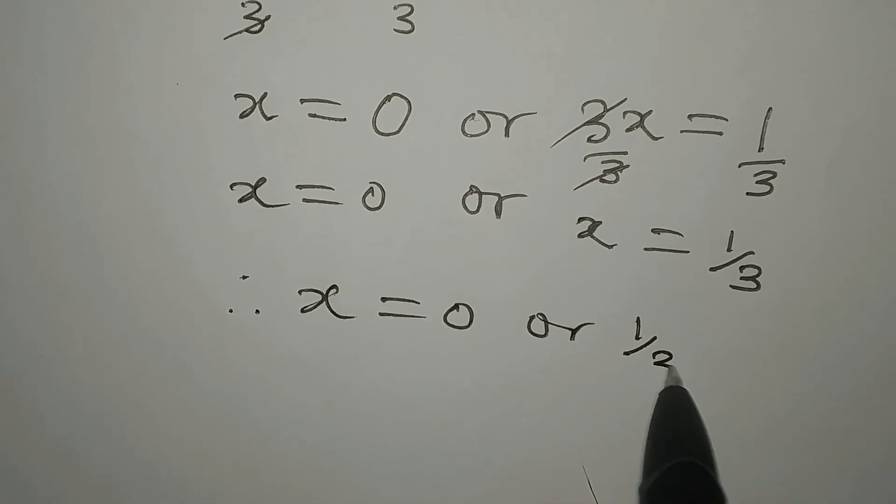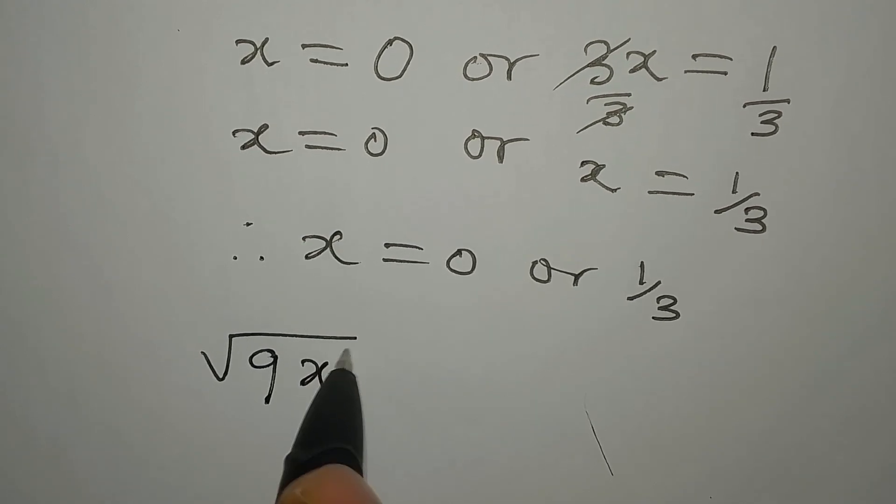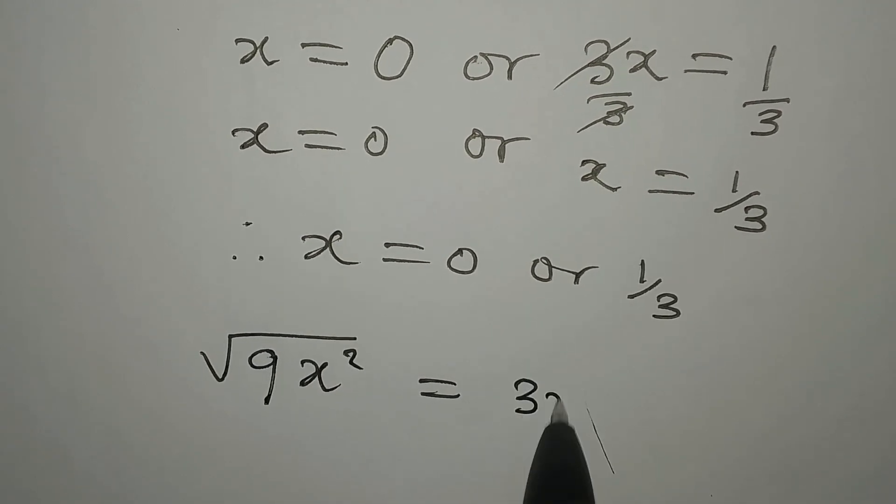To confirm our answer, we have square root of 9x squared being equal to 3x to the power of 2. From here we can put in the value of x as 0, and this will equal 3 into brackets 0 squared.